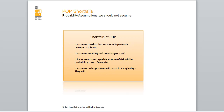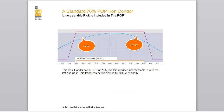We'll look at a couple of charts on the calculation of POP and why it does not work for the retail option trader. Here is an iron condor with the traditional industry calculation of POP. This particular POP is rated at a standard of 76%. When you look at this trade, it includes all the risk to the left, where this trade could get behind up to 30%, and to the right. If we have a flash crash of negative 10% in a matter of minutes, this trade will be at the 1800 level, meaning it will lose about 80% instantly.